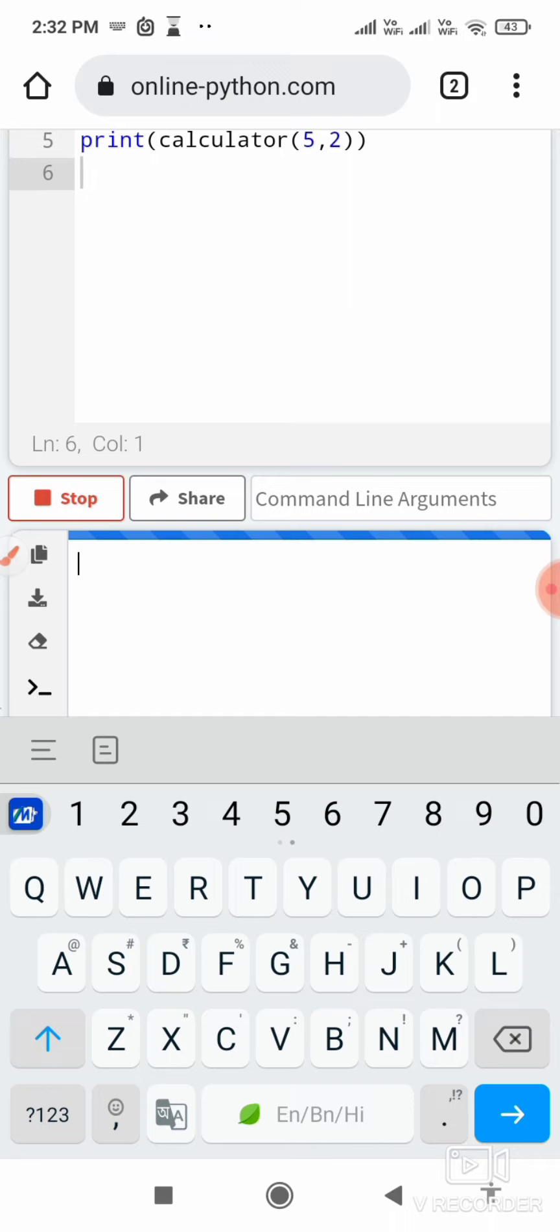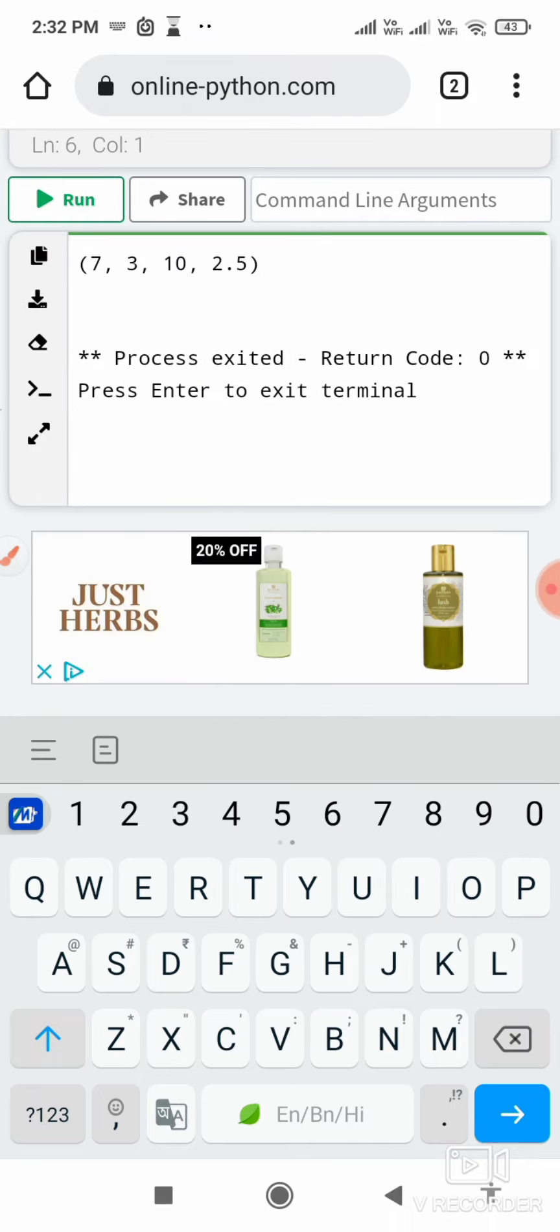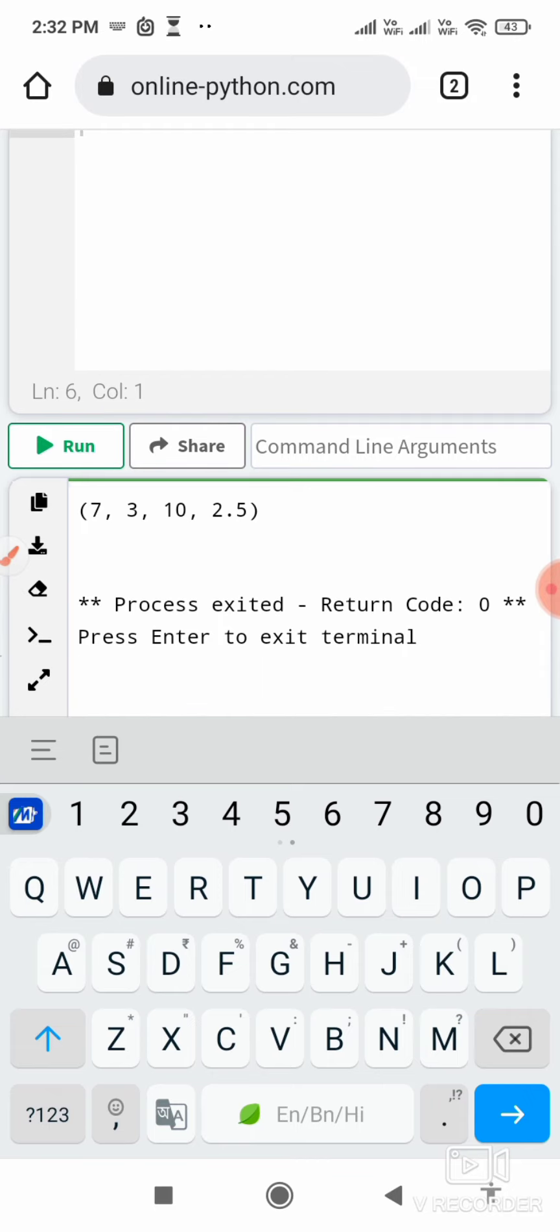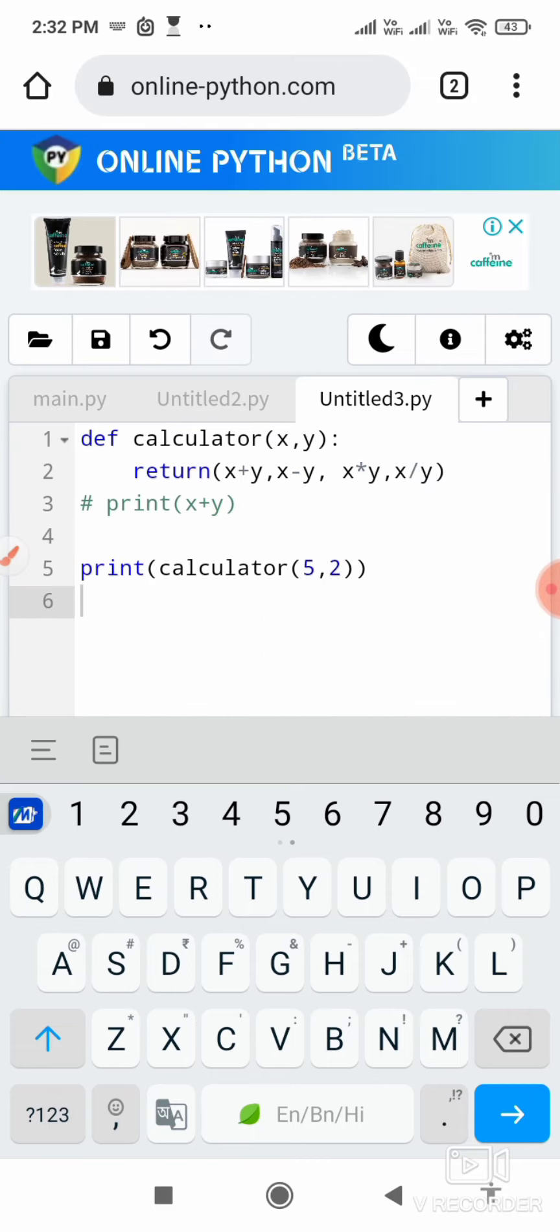If I run it, see I have got four different return values: 5 plus 2 is 7, 5 minus 2 is 3, 5 into 2 is 10, 5 divided by 2 is 2.5. So I'm getting multiple return values.